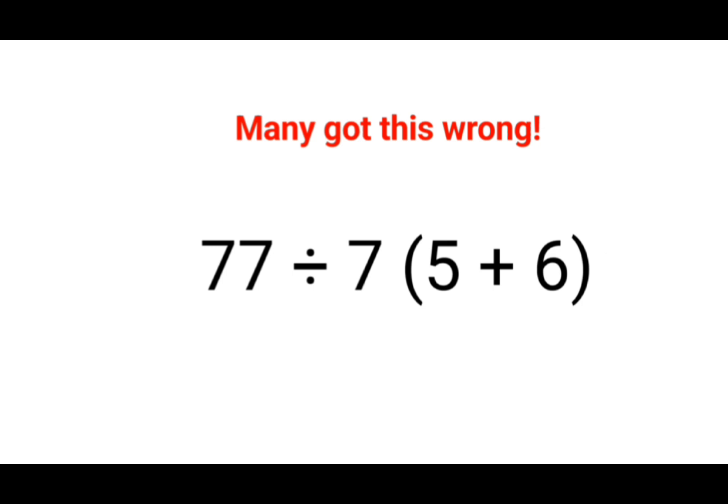First things first, let's write this in regular format. So 77 is written as is. Then we have division. Whenever you have division, you can convert it into multiplication. But when you do that, you need to remember that the number which follows after the division sign has to be written in its reciprocal.